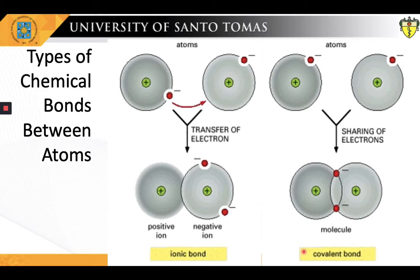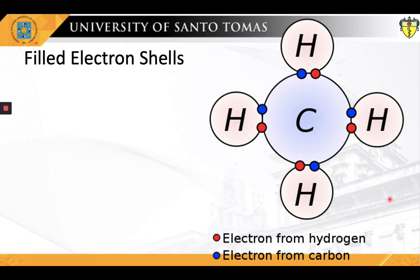An ionic bond is formed when electrons are transferred from one atom to the other. On the other hand, a covalent bond is formed when electrons are shared between atoms. What is shown here is a molecule of methane, or CH4. The illustration shows the completion of the outer electron shells of the atoms of hydrogen and carbon. With electron sharing, all four hydrogen atoms have complete electron shells with two electrons. Carbon, with atomic number 6, has only four electrons in its outermost orbital and therefore needs four more electrons to satisfy the octet rule. In order for carbon to achieve a filled electron shell of 8 electrons, each atom of hydrogen will have to share its lone electron. Thus, carbon will form covalent bonds with four atoms of hydrogen.